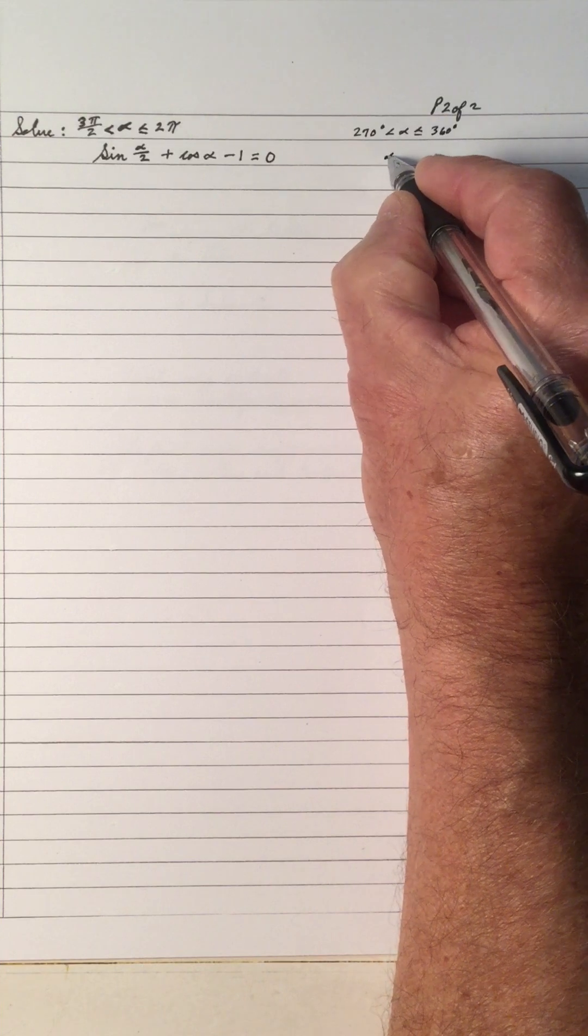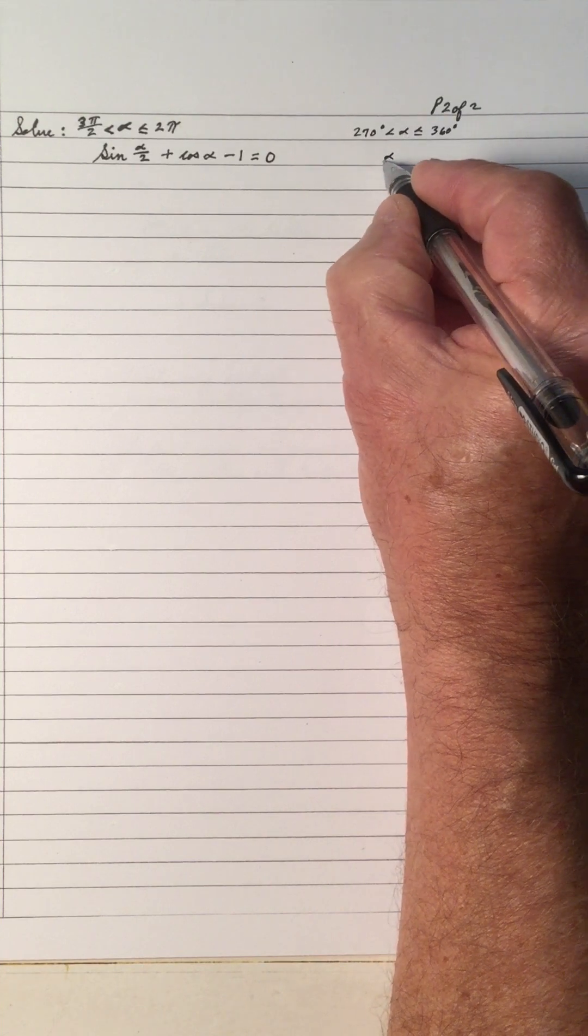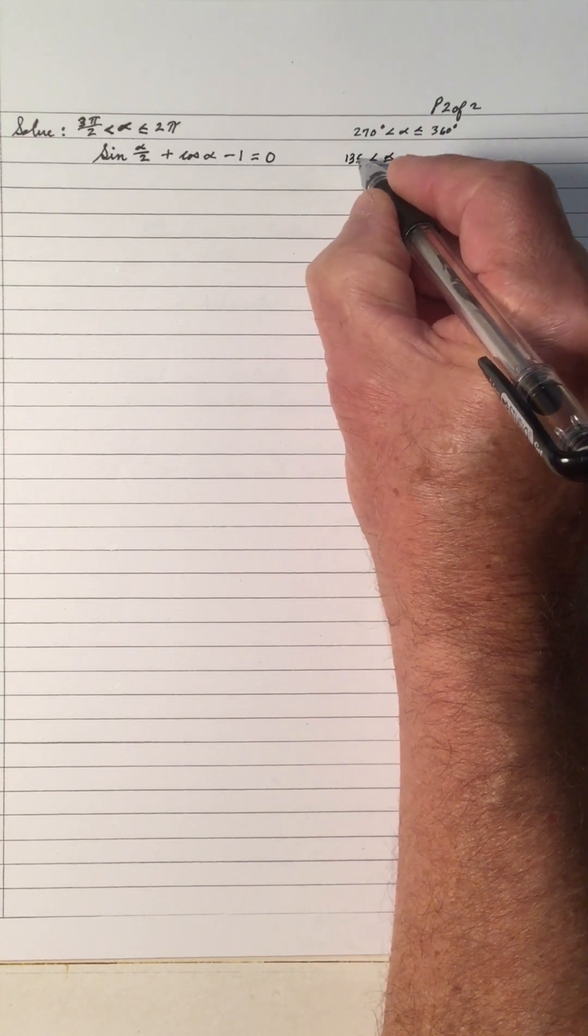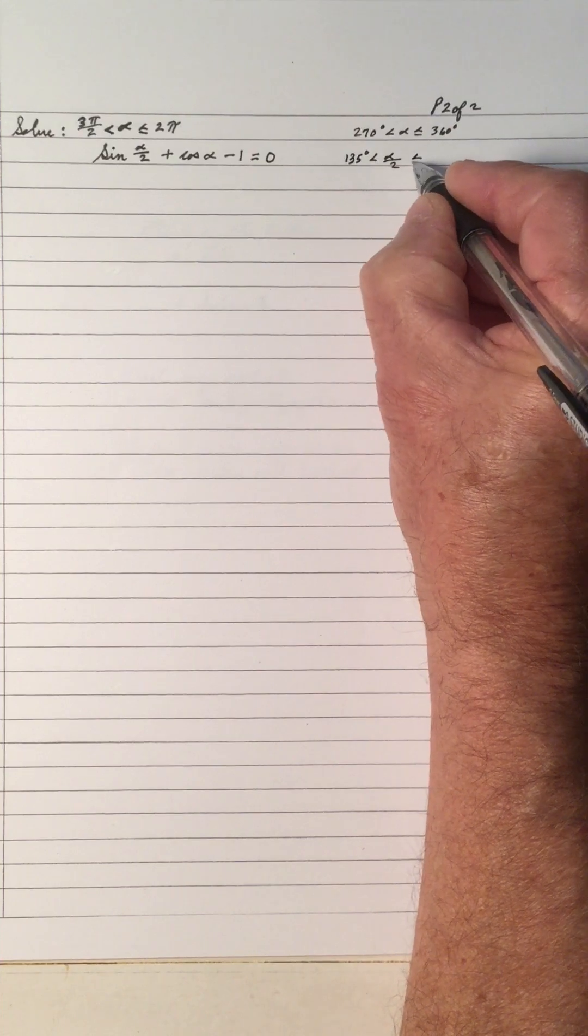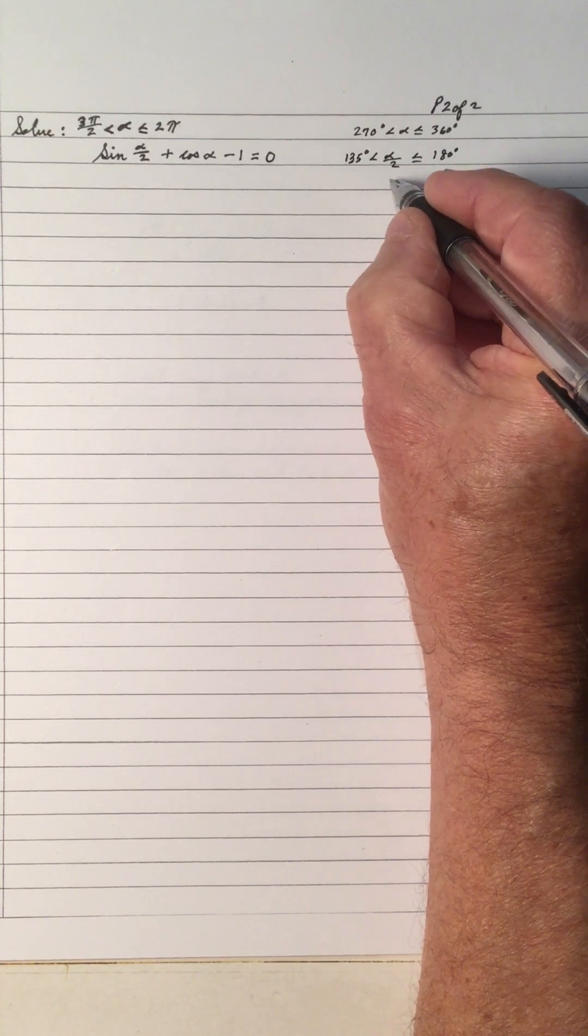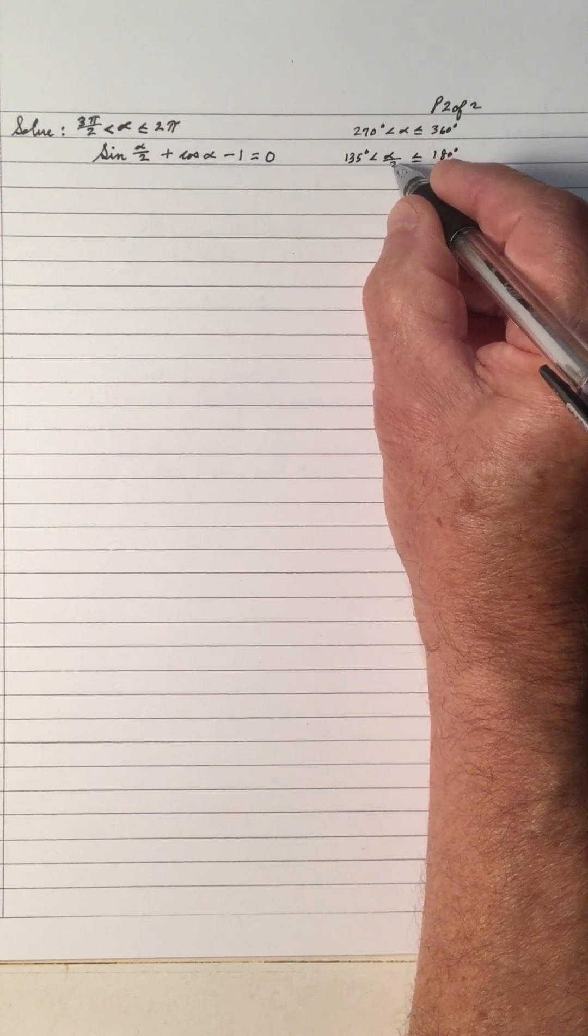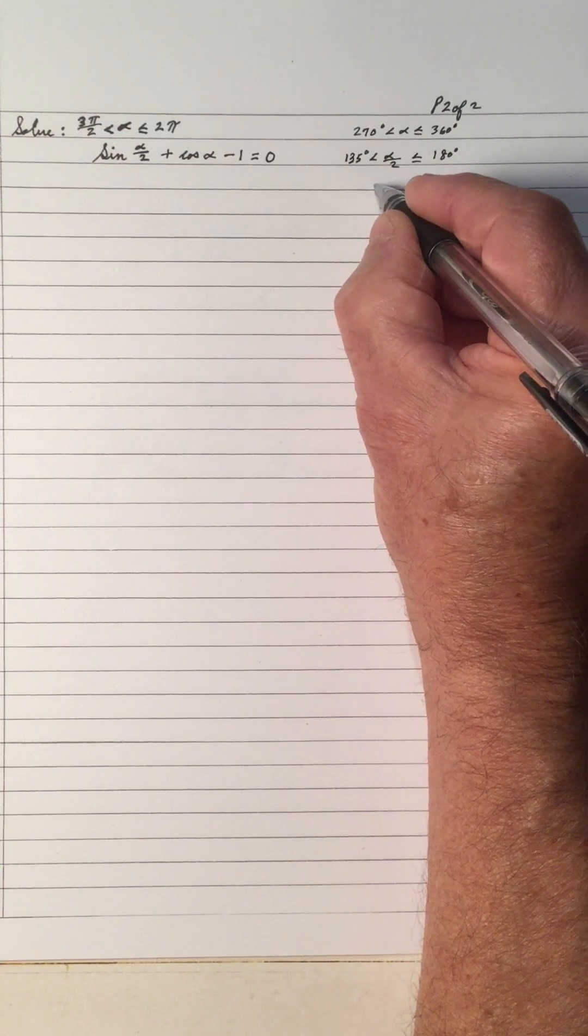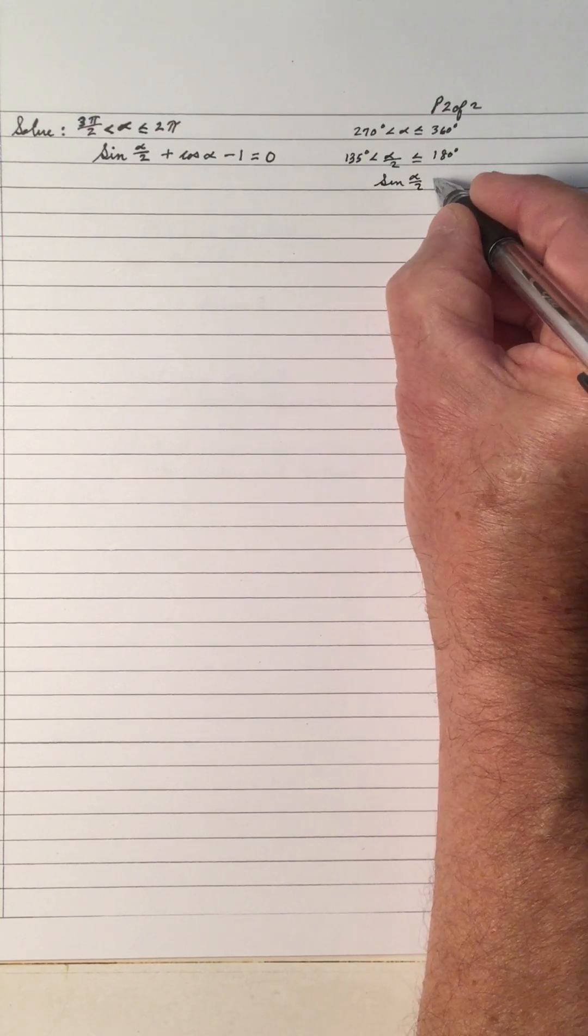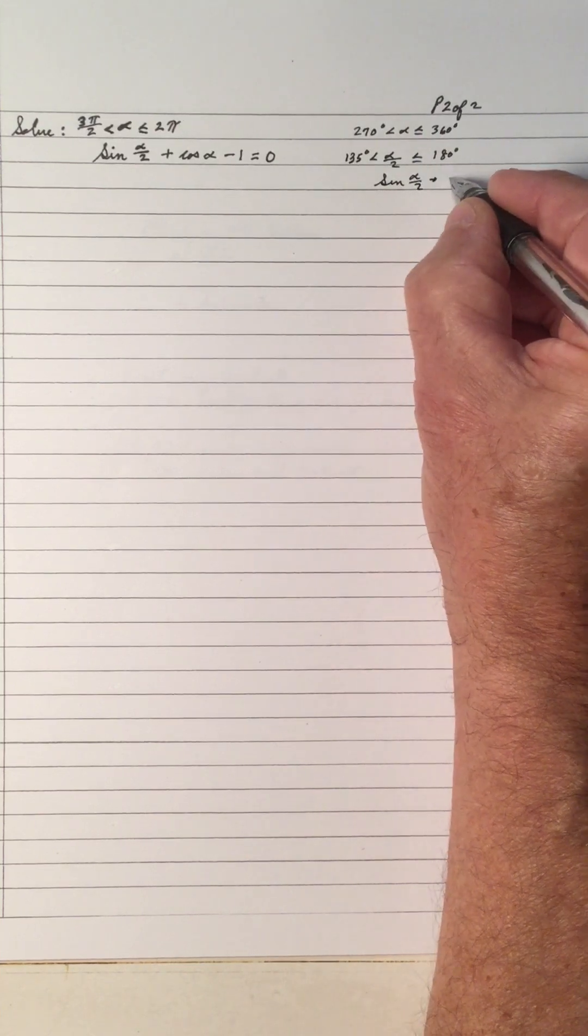If this is α, and we take α and divide by 2, dividing 270 by 2 we get 135. Dividing 360 by 2 we get 180. So that means α/2 is in the second quadrant.